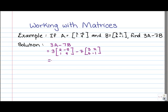Our next step is to perform the scalar multiplication. So we're going to take the 3 out front of A and multiply it through by each entry in A. So we're going to get 3 times 2, 3 times negative 5, 3 times 1, and 3 times 9.